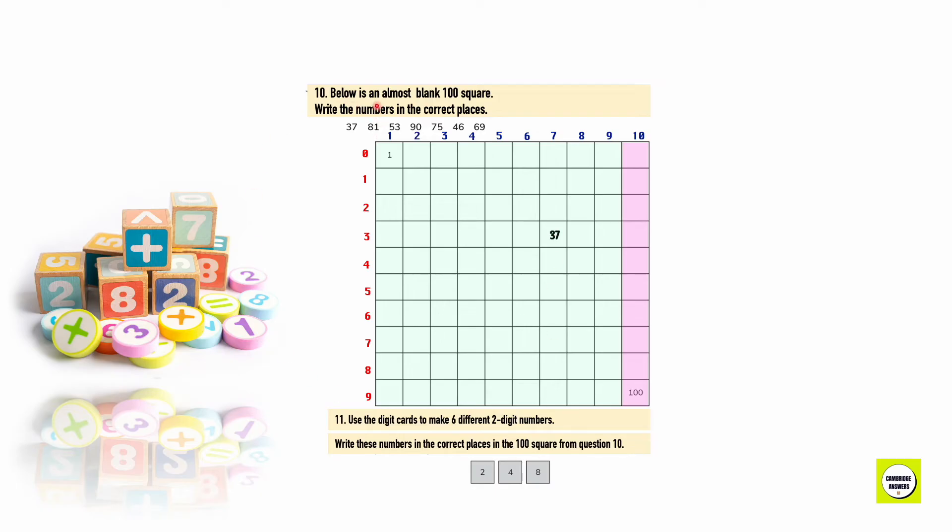81. 8th row and the first column. 81. 53. 5th row and third column. 90. Since this number comes in the count by tens, we are going to write it in the last column. 10, 20, 30, 40, 50, 60, 70, 80, 90. 75. 7th row, 5th column. 46. 4th row and 6th column. 69. 6th row and 9th column.